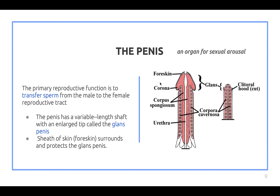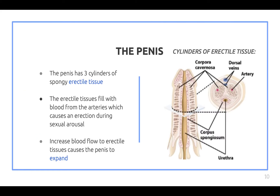The foreskin surrounds and protects the glans penis. The penis has three cylinders of spongy erectile tissue. These tissues fill with blood from the arteries, which causes an erection during sexual arousal. Increased blood flow to the erectile tissues causes the penis to expand.